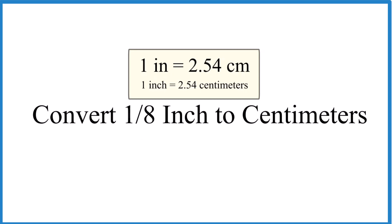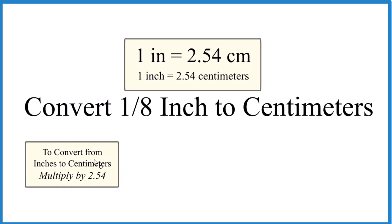So really all we need to do to convert our 1 eighth inch to centimeters is multiply 1 eighth inch by 2.54. So when we go from inches to centimeters we just multiply by 2.54.